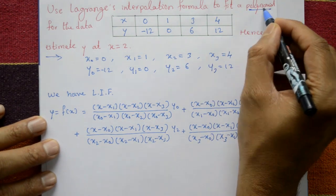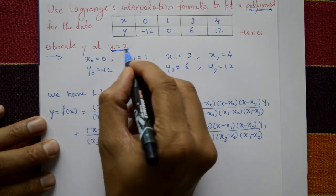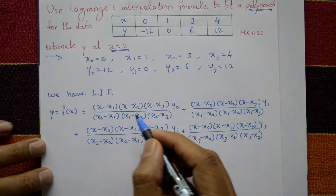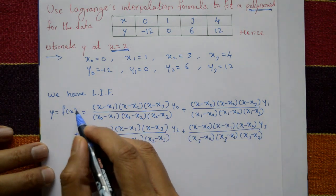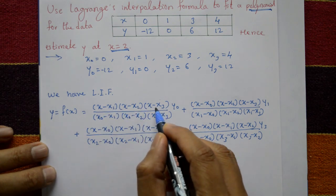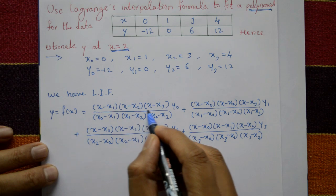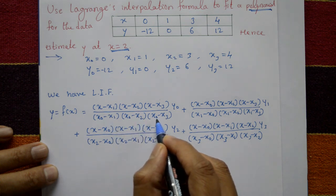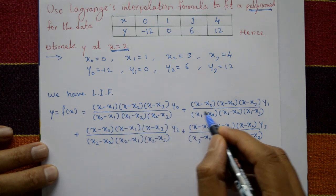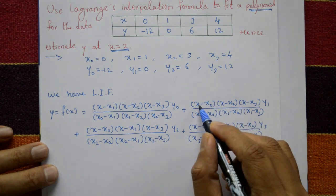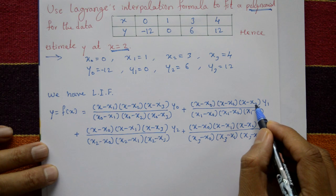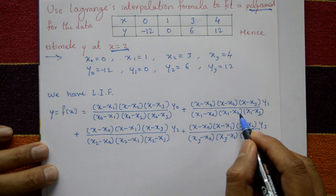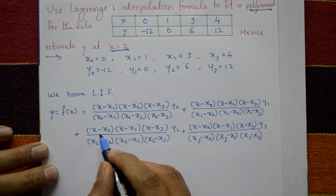First find the polynomial equation, then put x equal to 2. Now substitute the values using Lagrange's interpolation formula: y = f(x) equals, in the first term, (x minus x1)(x minus x2)(x minus x3) times y naught, divided by (x naught minus x1)(x naught minus x2)(x naught minus x3), plus the second term excluding x1: (x minus x naught)(x minus x2)(x minus x3) times y1, divided by (x1 minus x naught)(x1 minus x2)(x1 minus x3), plus the third term.